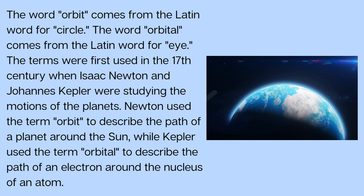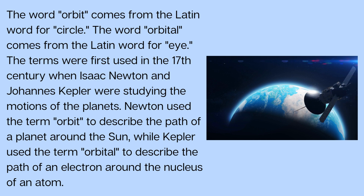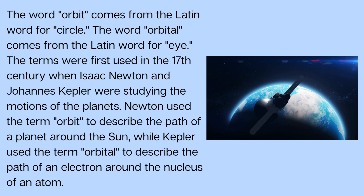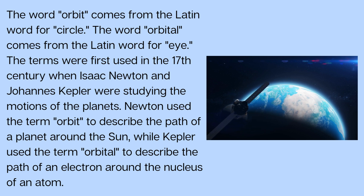The terms were first used in the 17th century when Isaac Newton and Johannes Kepler were studying the motions of the planets. Newton used the term orbit to describe the path of a planet around the sun, while Kepler used the term orbital to describe the path of an electron around the nucleus of an atom.